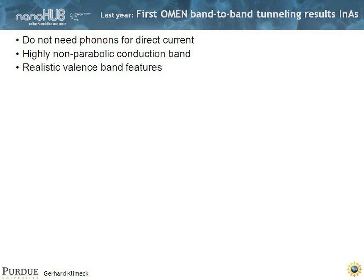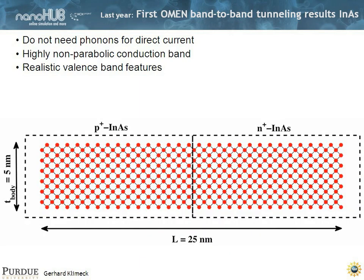So now, let's look at a device structure where we don't need phonons, because if you did this in silicon, this band-to-band tunneling, you went from a direct gamma point to an indirect X point, you would need phonons to take you properly from one band to the next. But if you have a direct gap material, like indium arsenide, you don't need phonons. So let's study cases first where we don't need phonons. In indium arsenide we don't need phonons, but we also know that it's a highly non-parabolic conduction band, and we know that we also need realistic valence band features. So we take a chunk of P plus indium arsenide and a chunk of N plus indium arsenide over a distance of 25 nanometer, and consider an ultra-thin body of height of 5 nanometers.